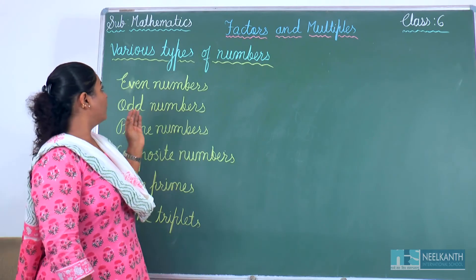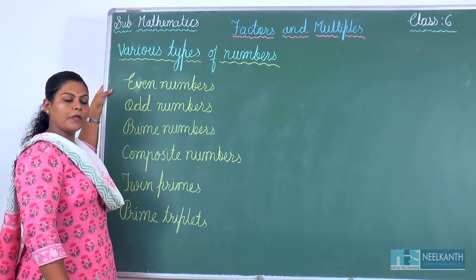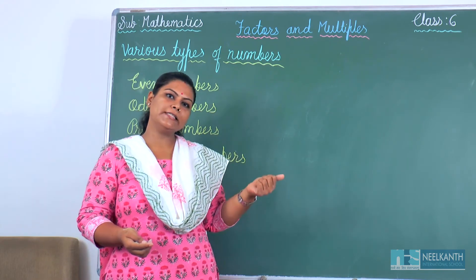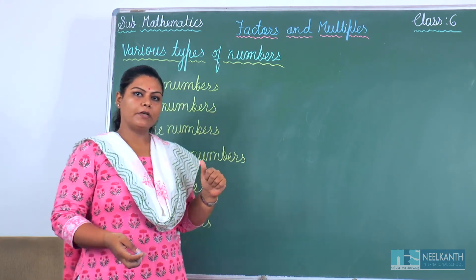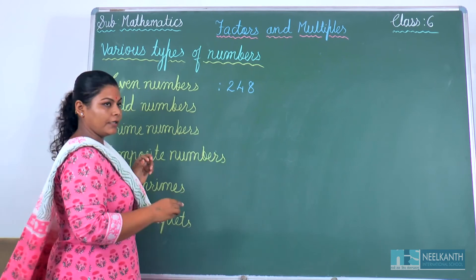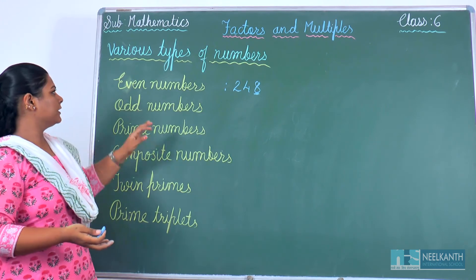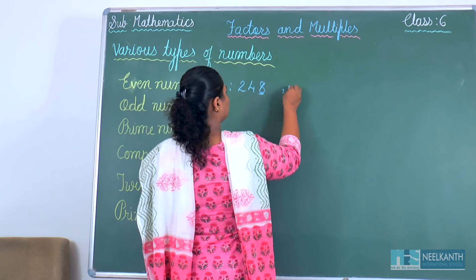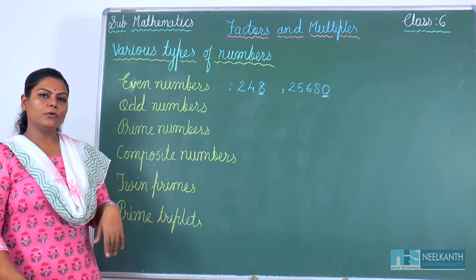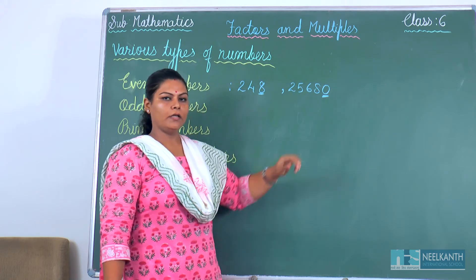Now let's see various types of numbers. We will learn about even numbers first. The numbers which end with 0, 2, 4, 6 or 8 at the ones place are called even numbers. For example: 2, 4, 8, 248 — at the ones place an even digit is there, so these are called even numbers. Another example: 25,680 — it ends with 0, and 0 is an even number.